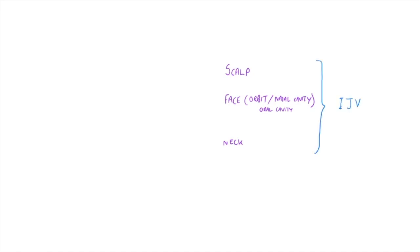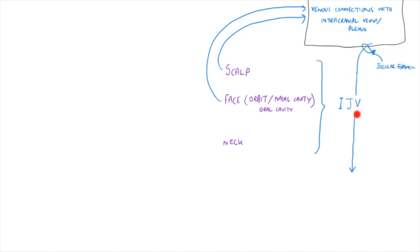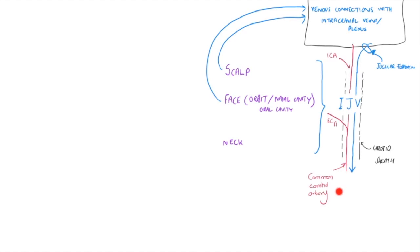Veins that drain the scalp and the face also have venous connections with a number of intracranial venous structures — veins that are essentially draining the brain and lie within the skull. The internal jugular vein itself is actually a continuation of one of these veins within the skull that exits through the jugular foramen. The internal jugular vein runs down the length of the neck, running through the carotid sheath along with the internal carotid and then common carotid artery, before ultimately joining with the subclavian vein to form the brachiocephalic vein, which drains into the right side of the heart.